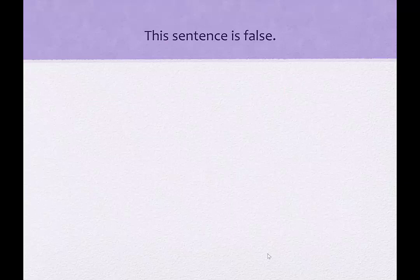"This sentence is false." You might look at this and decide that it's a statement. However, if you decide it is a statement and you decide it's true, then the sentence is false — which means that can't be right. So then you say, okay, the sentence is false. But then you're agreeing with the sentence, and therefore it is telling you a lie, because it says the statement is false and you're saying no, that's not true — but then it is true. Something like this is called a paradox, so this is not a statement. This particular kind of beast is called a paradox.